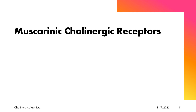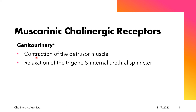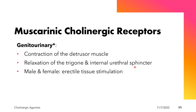For the genitourinary system, there is contraction of the detrusor muscle — the muscle that contracts to push urine out of the bladder and into the urethra. There is also relaxation of the trigone and the internal urethral sphincter to facilitate urination. In both male and female, muscarinic activation will also stimulate the erectile tissue.